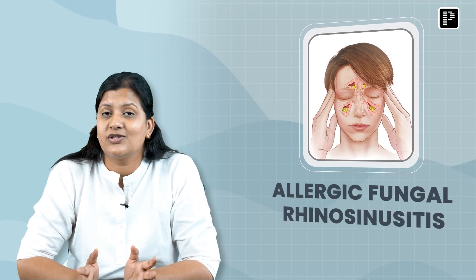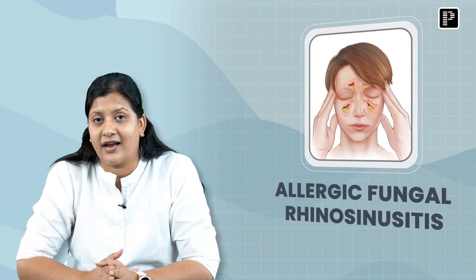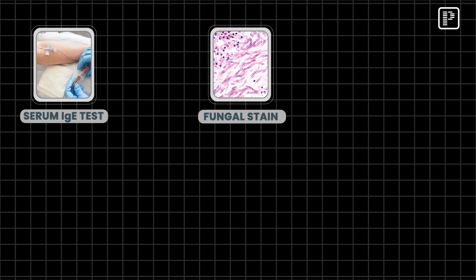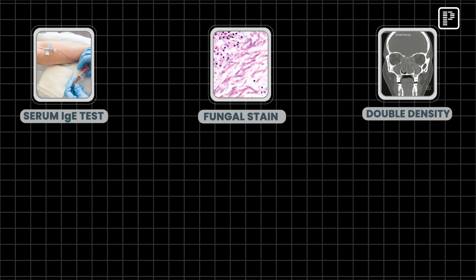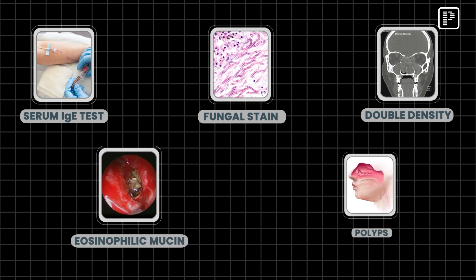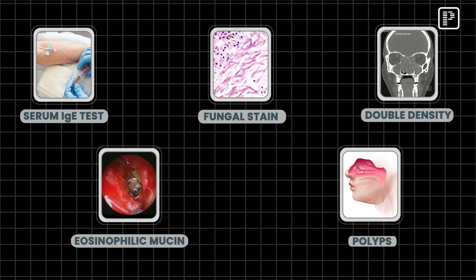In AFRS, or allergic fungal rhinosinusitis, serum IgE is positive because it's allergic. KOH stain or fungal stain is positive because it's due to fungus. CT scan shows heterogeneous density. There is eosinophilic mucin and polyps. These five criteria are nothing but Bent and Kuhn's criteria for AFRS.